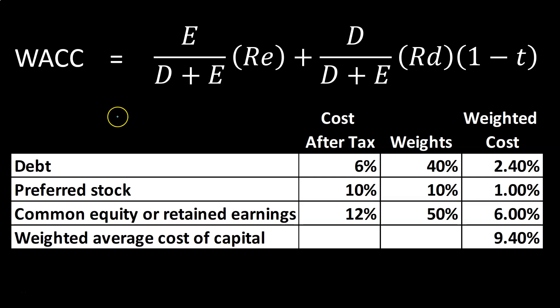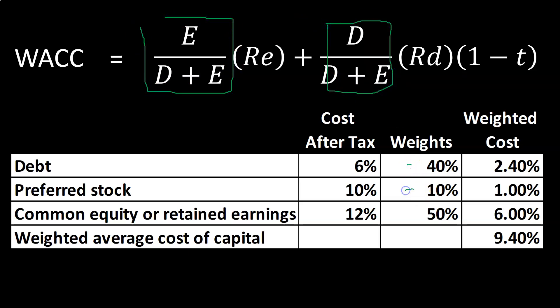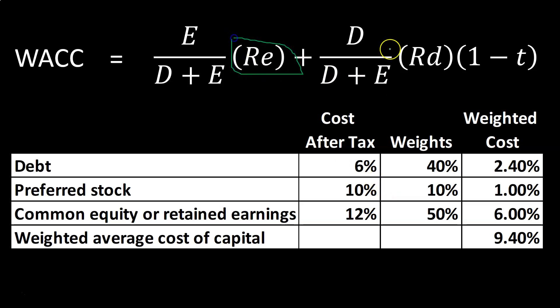Now we're going to go into a little bit more detail about the WACC formula in concept and why the weighted average component is going to be important. We started off thinking about the components of this formula, breaking them out into the financing of the organization into two main categories: debt financing and equity financing, thinking about the concept of the weighting. Then we considered the calculation for the cost of debt and equity.